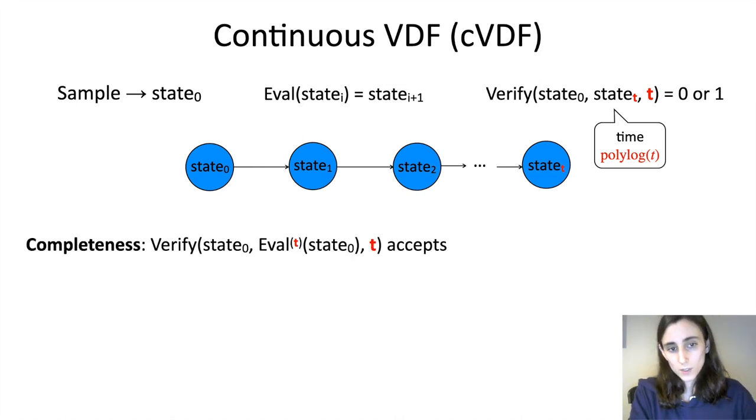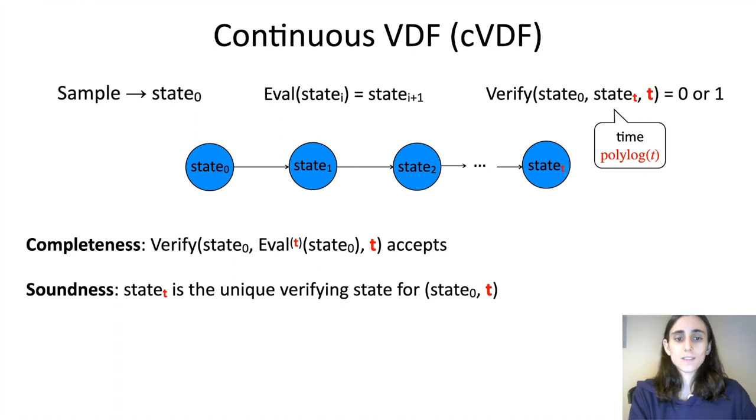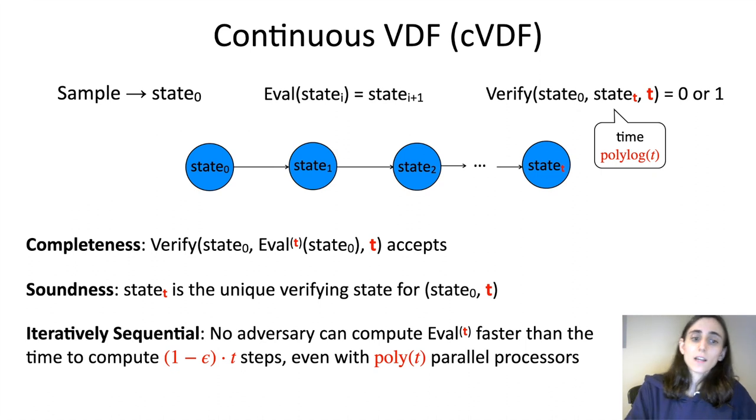The three properties that we require from a continuous VDF is completeness, which says that the t-th state, or the t-th iteration of eval, should successfully verify for any t. Soundness, which says that the t-th state is the unique verifying state. And finally, it should be iteratively sequential, meaning nobody can speed up iterations of eval. In particular, we require that nobody can compute the t-th state in less than 1 minus epsilon times t steps, where epsilon should be thought of as an arbitrarily small constant. And again, this holds even with poly-t parallel processors.